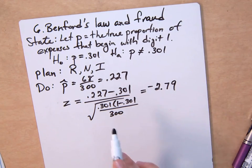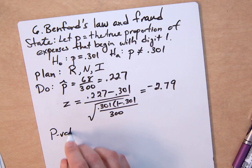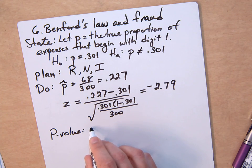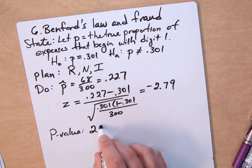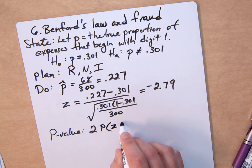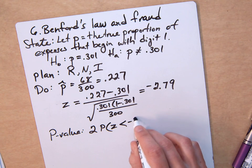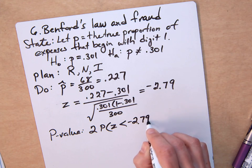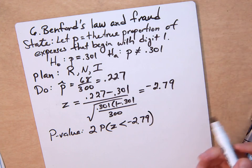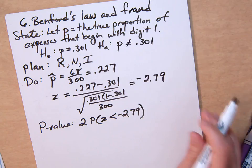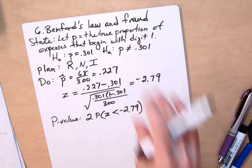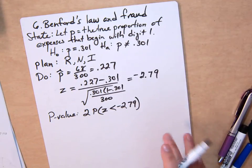Since it's a two-sided test, for our p-value we want 2 times the probability that Z is less than—or you could say greater than—negative 2.79. The distribution is perfectly symmetric, so it doesn't really matter, but we need to double the answer because it's a two-sided test.